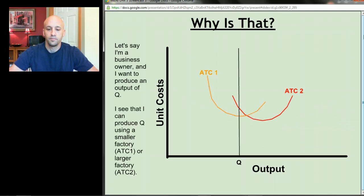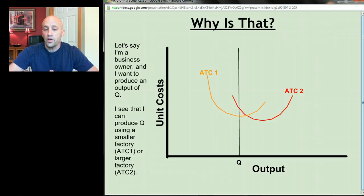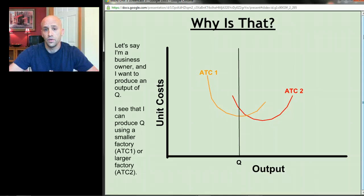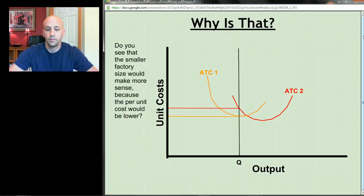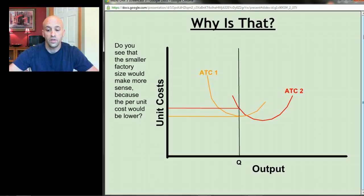Let's talk about two specific factory sizes to keep things simple. Say I'm a business owner and I want to produce a certain quantity of output Q. We have two factory sizes: the orange one (ATC1) and the red larger one (ATC2). I can produce quantity Q using either factory. If you look at the graph carefully, you should notice that I'd be better off picking the smaller orange factory — it gives me lower average total costs.